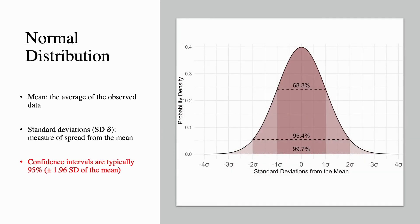The normal distribution involves using the mean — the average of the observed data — standard deviations, and delta, which is the measure of spread from the mean. This gives us confidence intervals, which are typically 95%, at plus or minus 1.96 standard deviations of the mean.